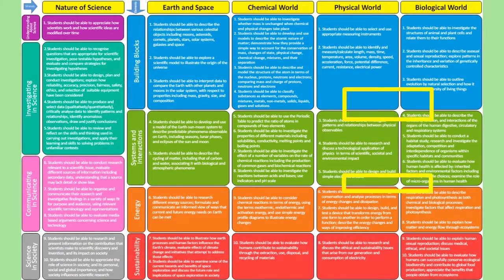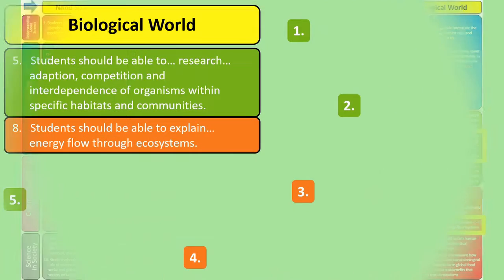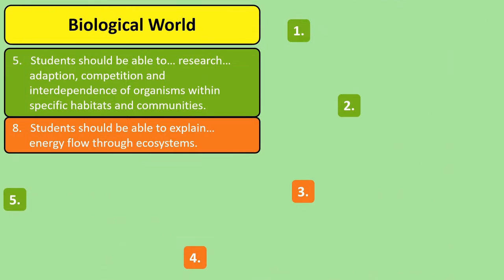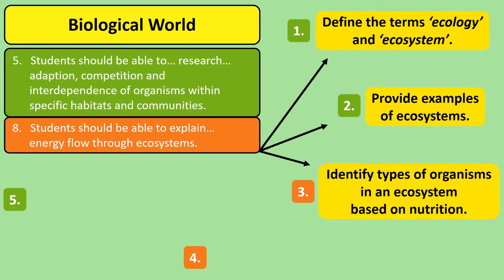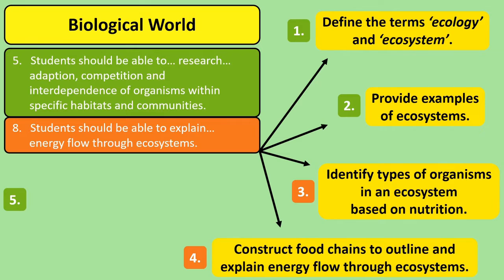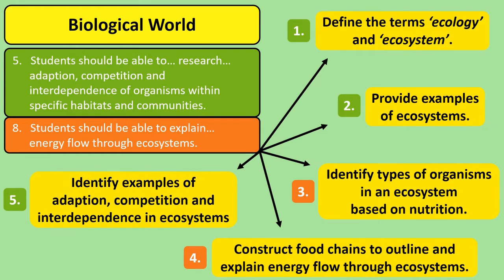Based off the NCCA learning outcomes, five things we'll be revising in this video are: what the terms ecology and ecosystem mean, along with identifying examples of ecosystems. We'll discuss the types of organisms we find in ecosystems and draw food chains to describe energy flow within an ecosystem. Lastly, we'll identify examples of adaptations, competition and interdependence.